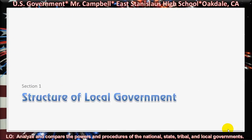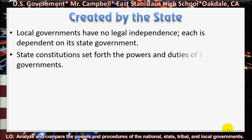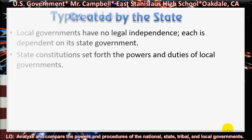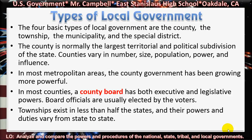Section 1, The Structure of Local Government. Local governments have no legal independence — each is dependent on its state government. State constitutions set forth the powers and duties of local governments. The four basic types of local government are the county, the township, the municipality, and the special district. The county is normally the largest territorial and political subdivision of the state. Counties vary in number, size, population, power, and influence. In most metropolitan areas, the county government has been growing more powerful.